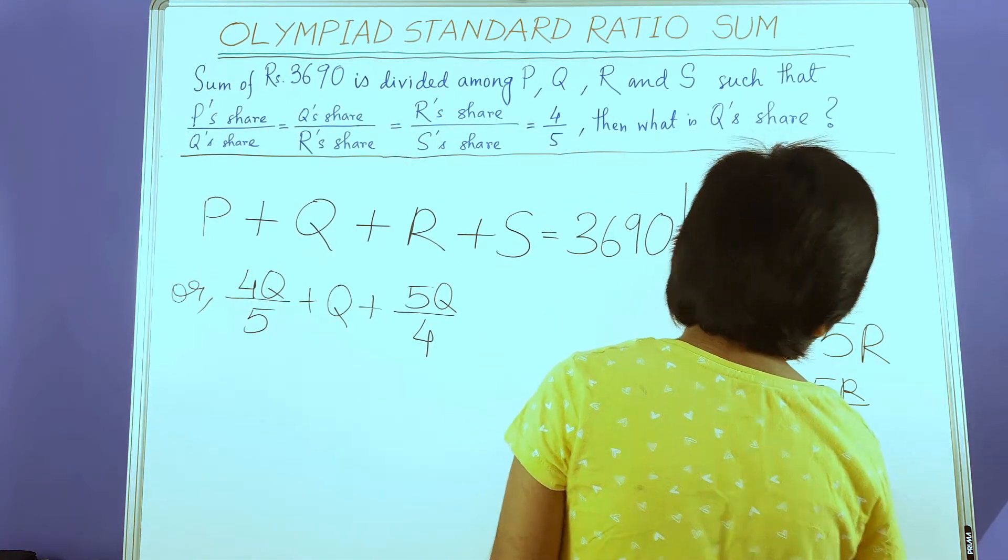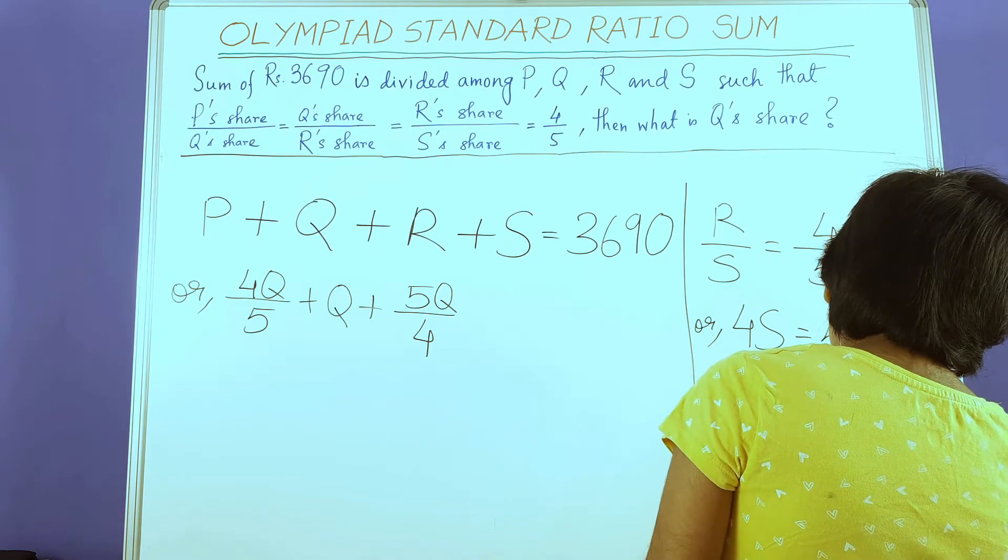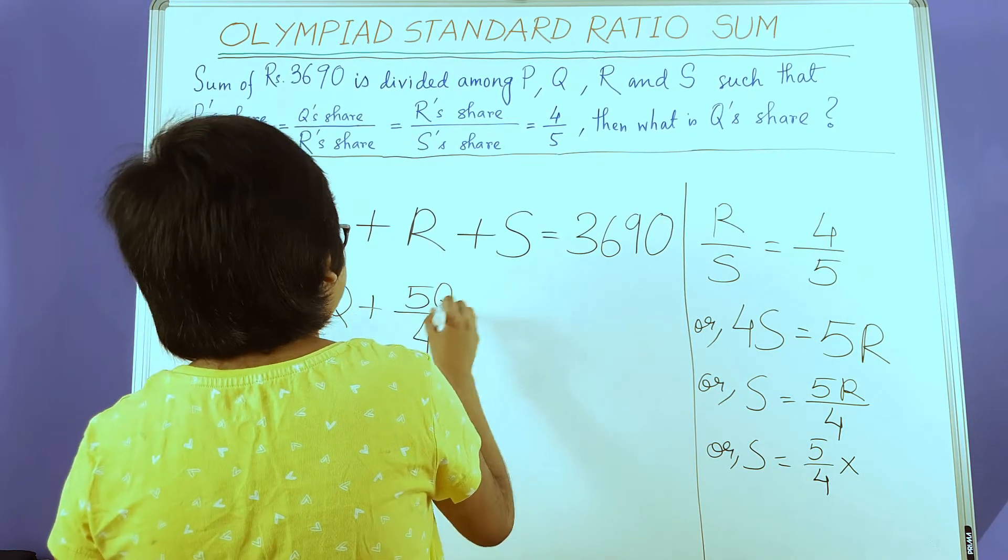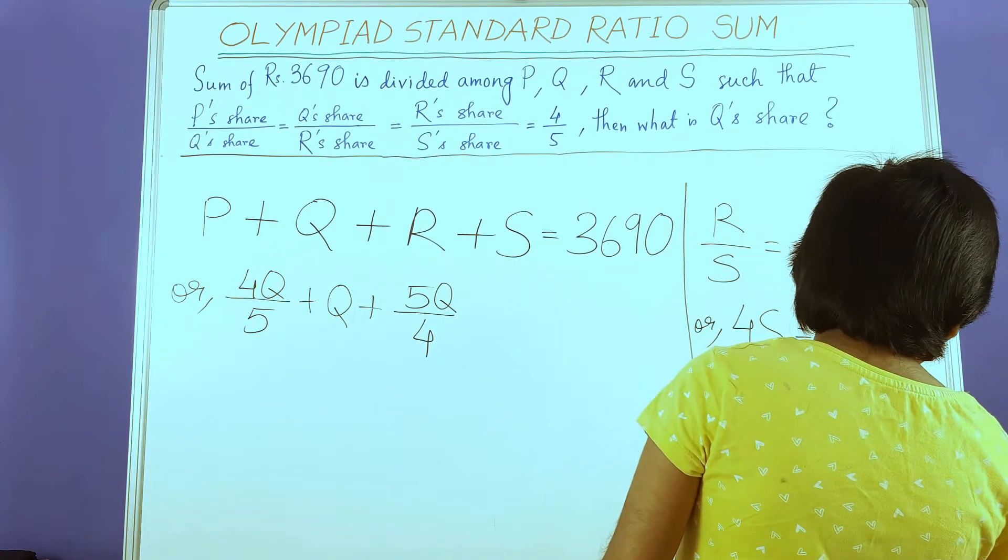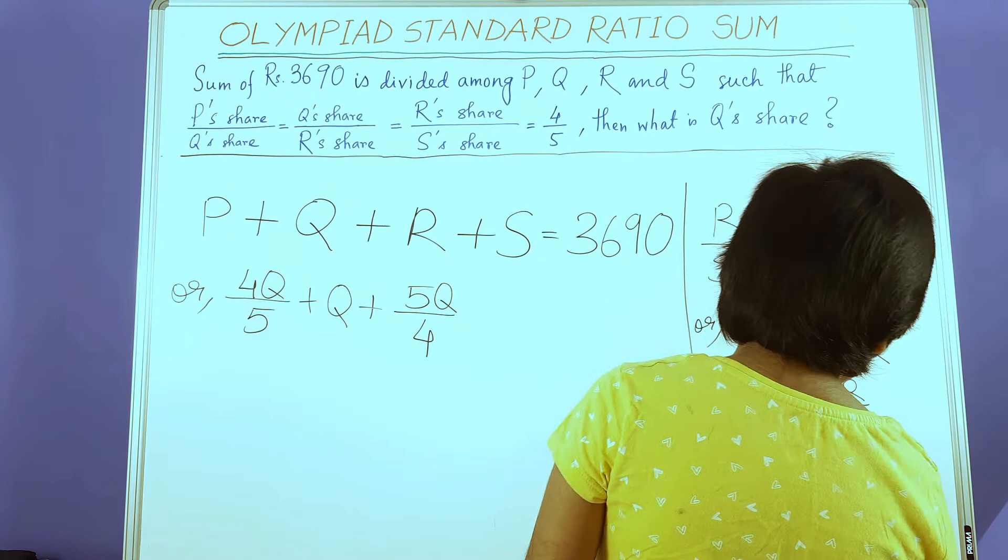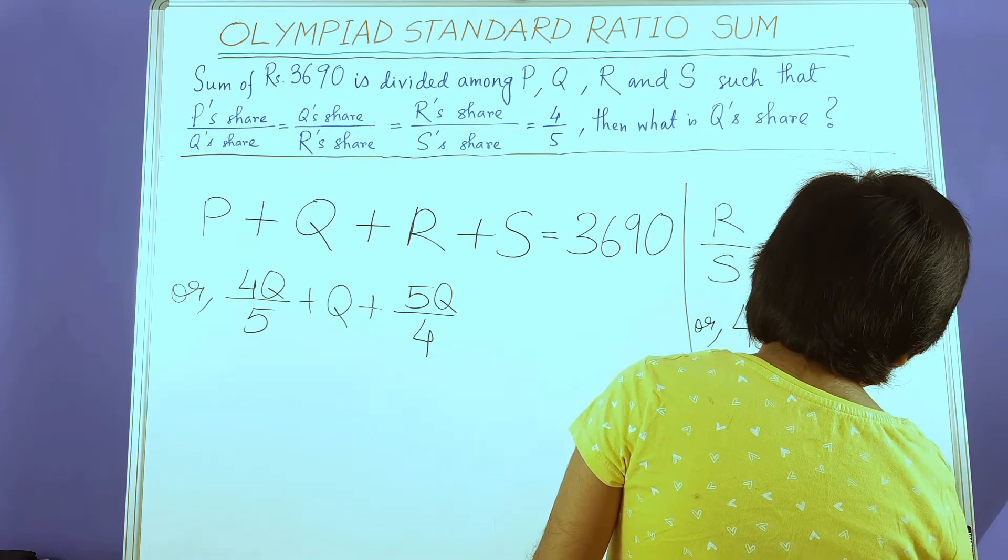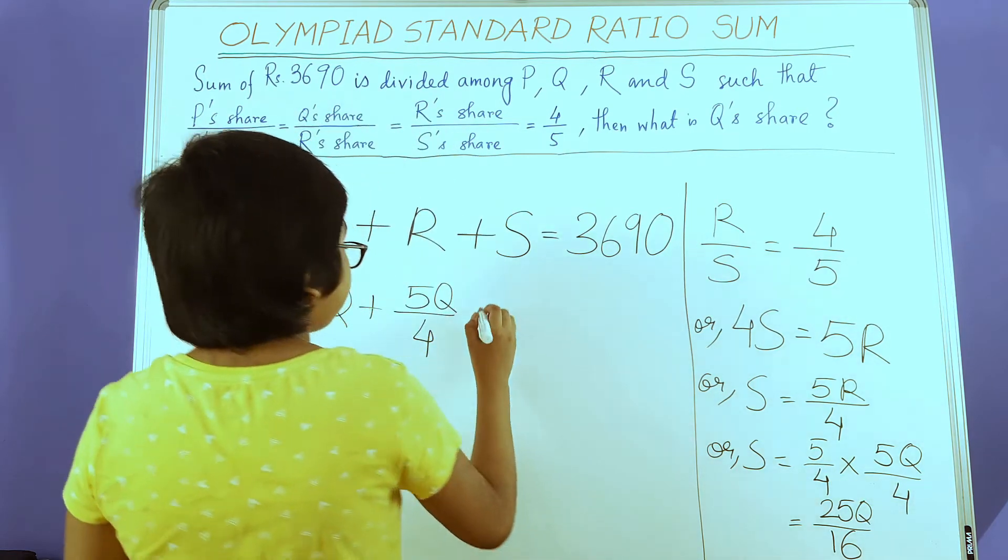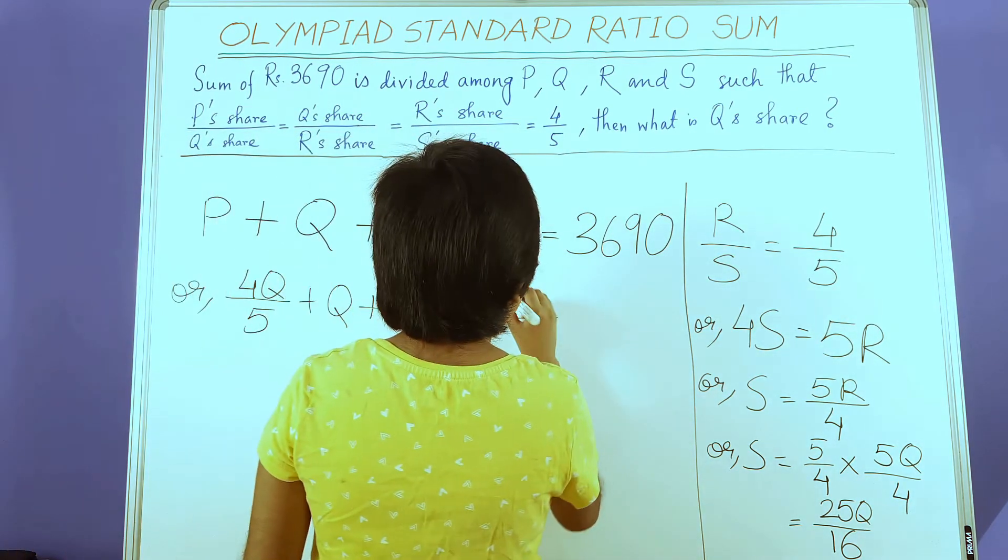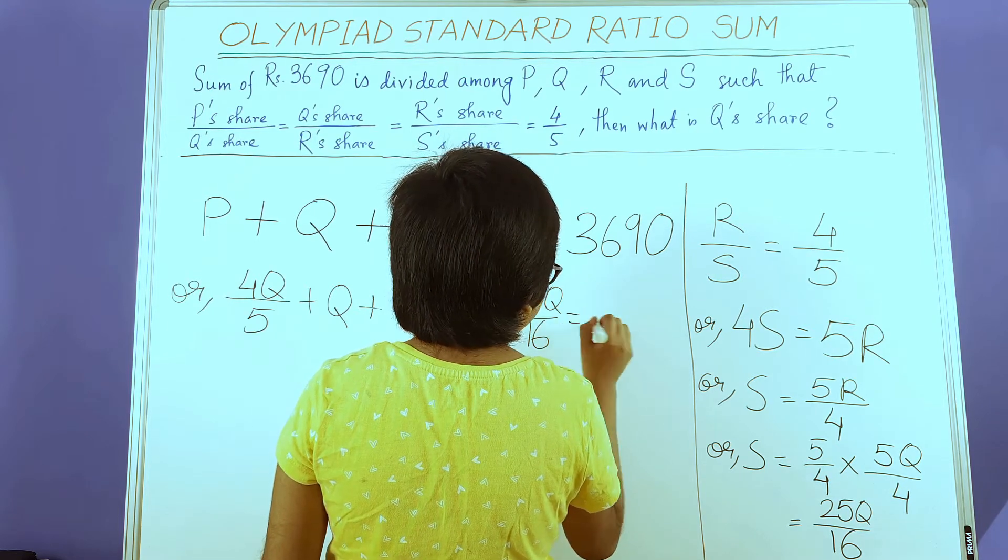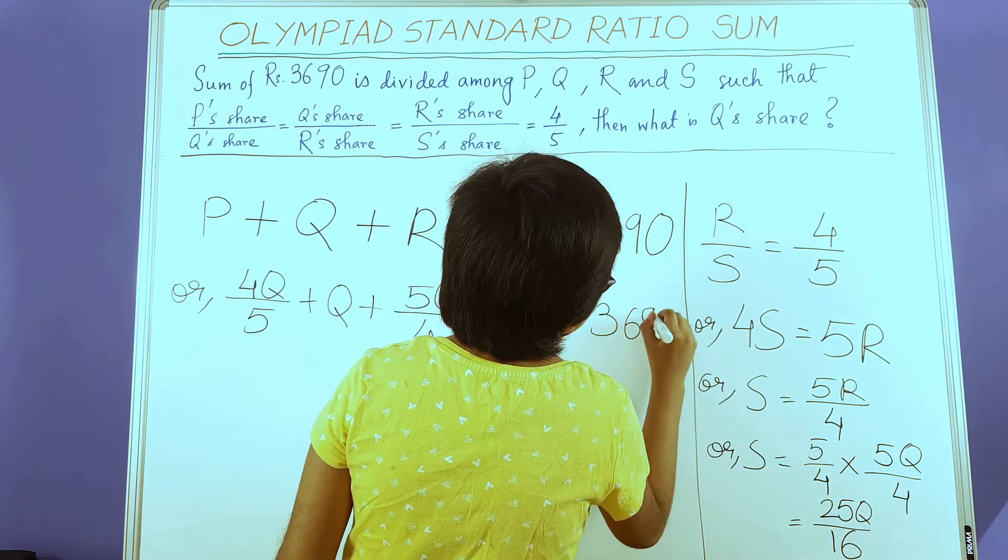Substituting, we get 5 by 4 into 5Q by 4, which is 25Q by 16. Ultimately, we have 4Q/5 + Q + 5Q/4 + 25Q/16 = 3690.